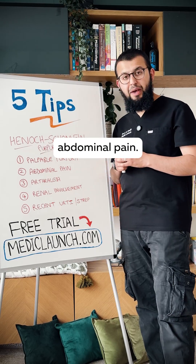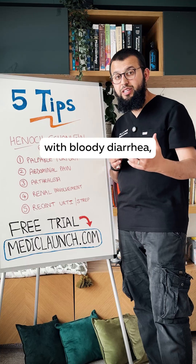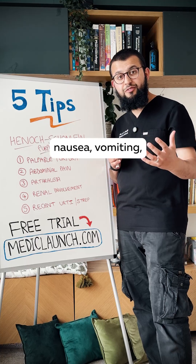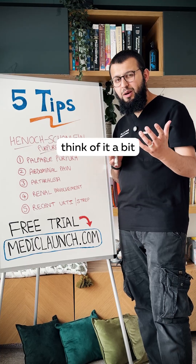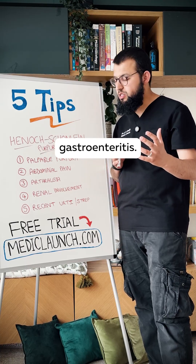The second sign is abdominal pain. This can also be associated with bloody diarrhea, nausea, and vomiting. Think of it a bit like a vasculitic gastroenteritis.